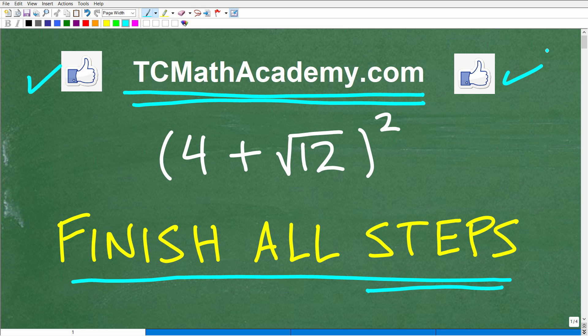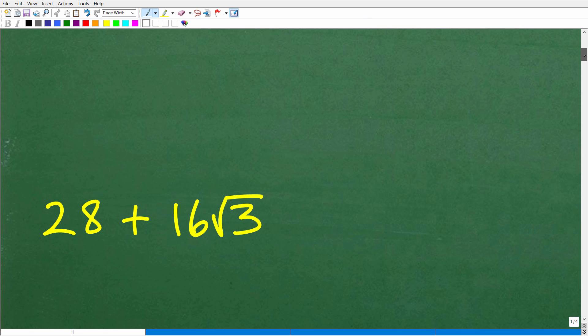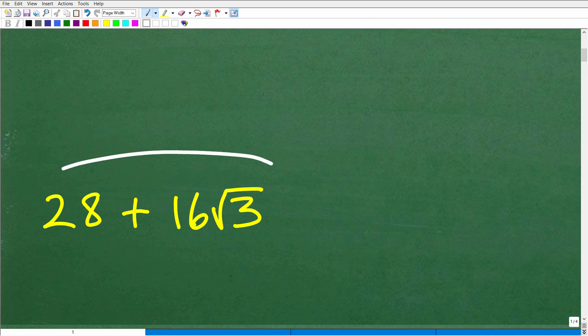So 4 plus the square root of 12, all of that squared, what is this equal to? Let's go and take a look at the answer right now. The answer is 28 plus 16 times the square root of 3. Now some of you very well could have been on the right track, but you didn't finish out the problem, so don't judge yourself yet whether in fact you were totally wrong.